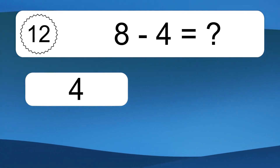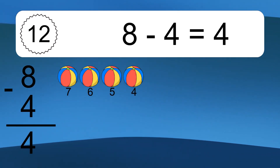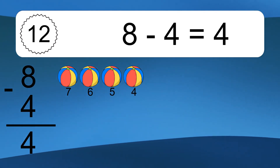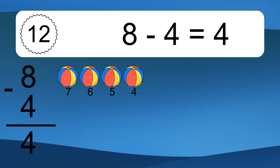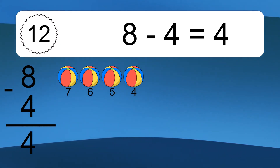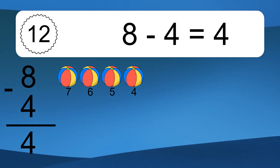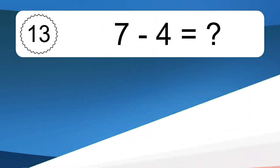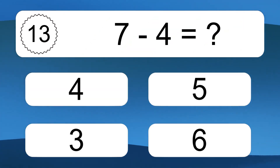Eight minus four equals what? Eight minus four equals four. Let's count it: seven, six, five, four. Seven minus four equals what?